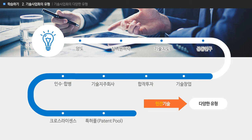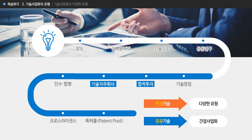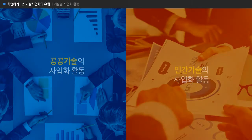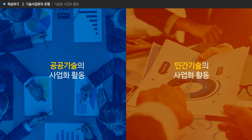기술이전 거래에 있어서 민간기술의 경우는 다양한 유형으로 사업화가 전개되지만, 기술 보유자가 대학·국책연구소 등 공공기술은 기술의 이전을 통해 간접사업화를 추진하는 사례가 일반적입니다. 최근에는 합작투자나 기술지주회사 설립, 연구소 기업 설립 등의 기술 출자 방식을 통해 직접 사업화를 활성화시키고 있는 추세입니다.